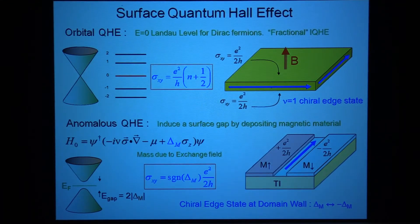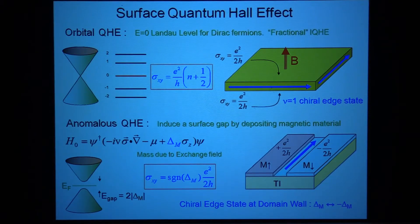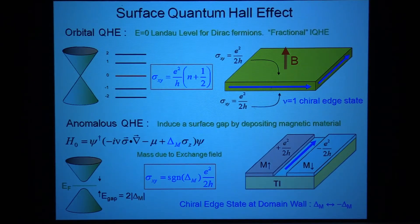Question: So you're saying the one-half can never be observed at the surface? Answer: Not in a transport experiment, because a transport experiment in the quantum Hall effect is always measuring edge states. You could observe it if you know it's the top and bottom surfaces and divide the measured conductance by two — but whether that counts as observing the one-half is debatable.